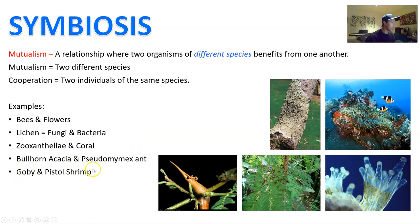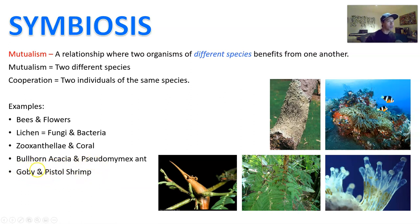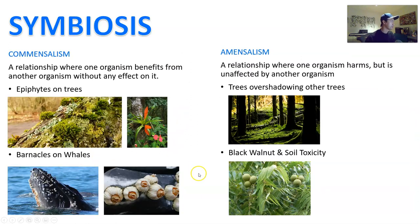Gobies and pistol shrimp also have a mutualistic relationship. Gobies create burrows in the sand and the pistol shrimp will live in there. The goby protects the pistol shrimp, while the pistol shrimp cleans the burrows so the goby can survive. That's a neat little relationship.